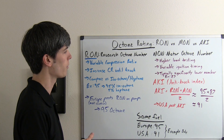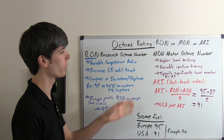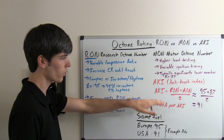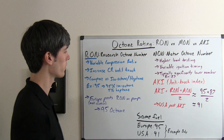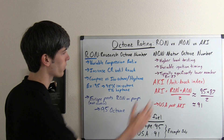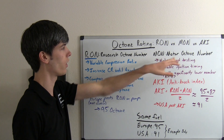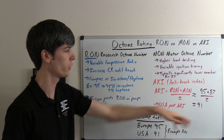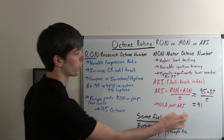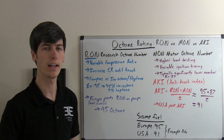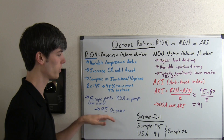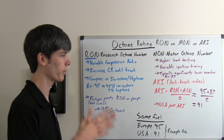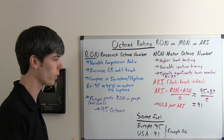In the US, what we do is take the average of the RON and MON — this is called AKI. For example, if the same fuel got a 95 on the RON test and an 87 on the MON test, that's 95 plus 87 divided by 2, which equals 91. So in the US you would see 91 posted as the octane rating, whereas in Europe you would see 95. Note that this is just an example — it doesn't mean every fuel rated 95 in Europe is always 91 in the US.